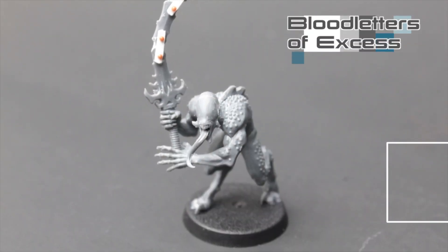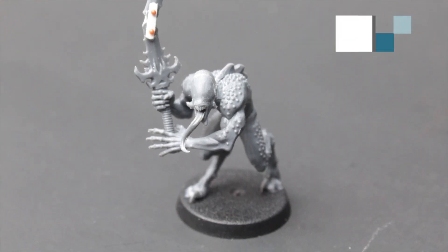Hi, this is Austin with Brush for Hire with another mini Wargaming Technique video. This time we're converting a Bloodletter to the Ways of Excess.